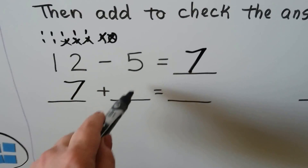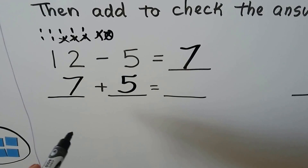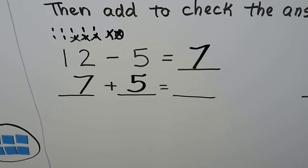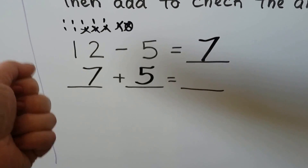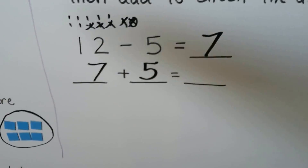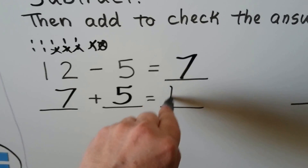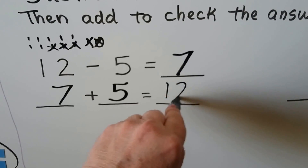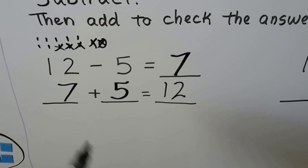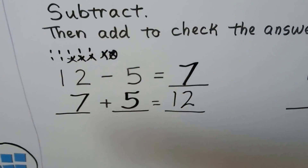We use the same number five here. Our sum is the same as the minuend in the subtraction sentence, so we know we did our subtraction correctly.